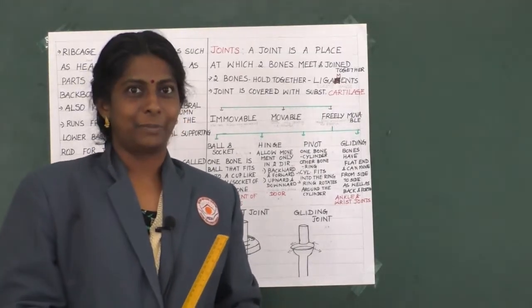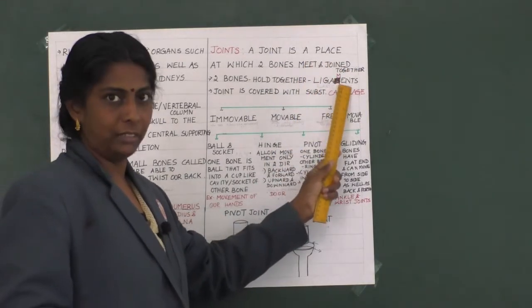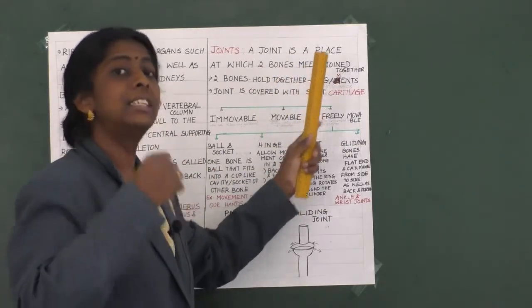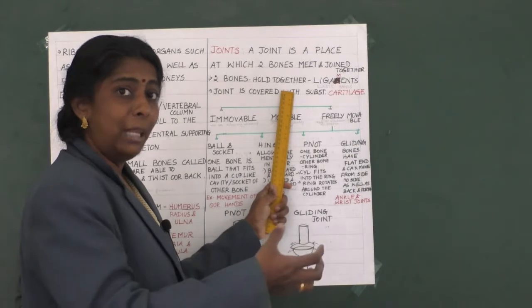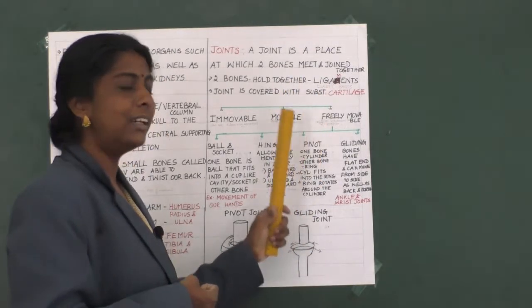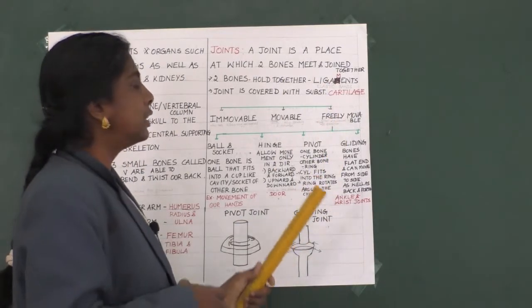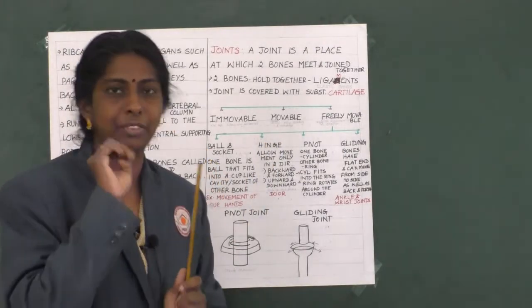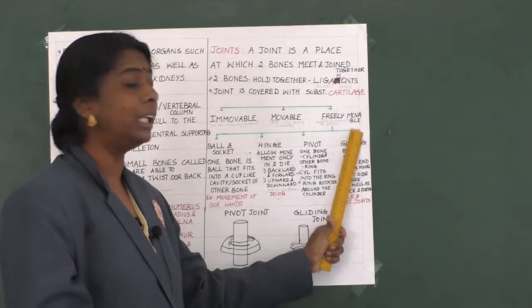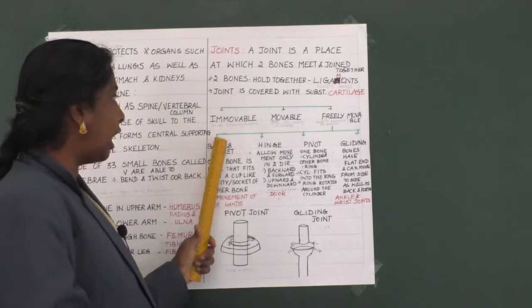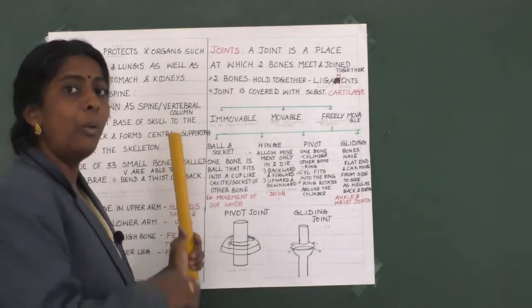Now let us learn about joints. A joint is a place where two bones meet and join together. Two bones are held together with the help of elastic bands called ligaments, and the joint is covered with a substance called cartilage. There are three types of joints: immovable joints do not allow any movement; movable joints allow only bending and rotation.